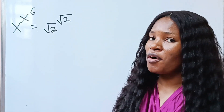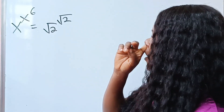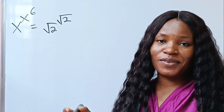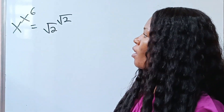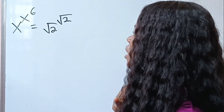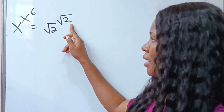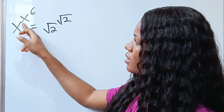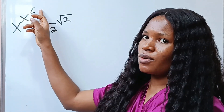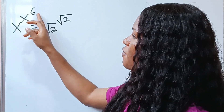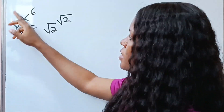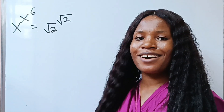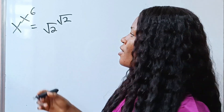Let's quickly solve for the value of x. The first thing we need to do is get the same thing on both sides. We need to get x to the power of 6 here and x to the power of 6 here. The only way to do that is if we raise everything to the power of 6, though when we do that this side changes. Let's see how it goes.